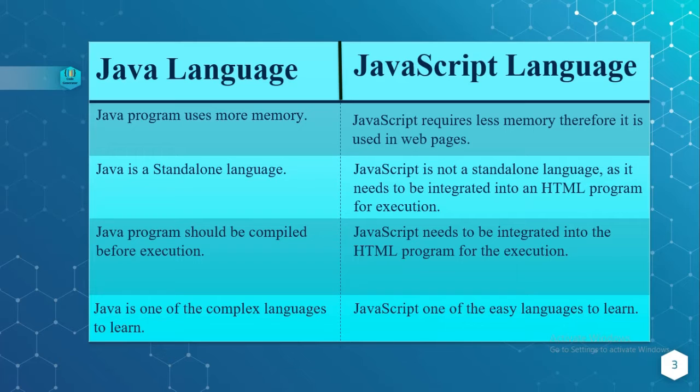Java programs make use of more memory, whereas JavaScript does not require more memory — it requires less memory, and therefore it is used for web page connectivity. Java is a standalone language, whereas JavaScript is not a standalone language as it needs to be integrated with an HTML program, and it also makes use of CSS, that is Cascading Style Sheets.